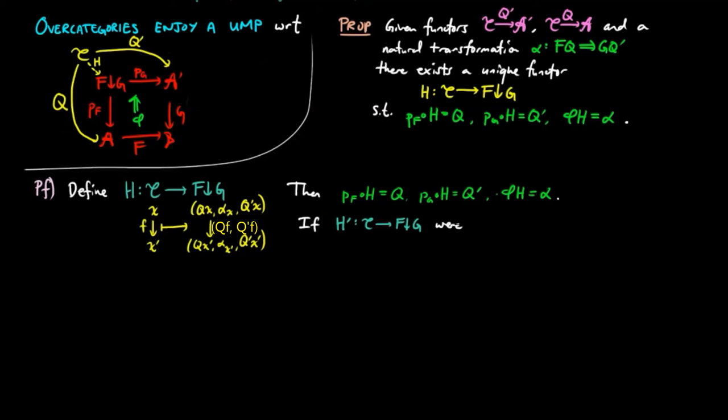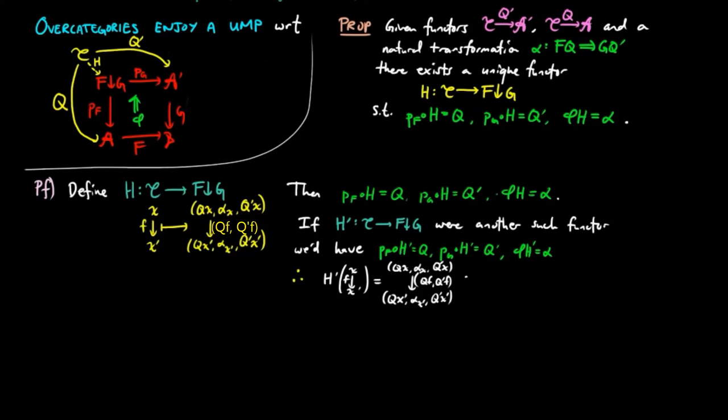Then if h prime is another such functor, then we also have that pfh prime is equal to q, pgh prime is equal to q prime, and phi h prime is equal to alpha. And so we are forced to describe h prime to take the morphism f to qf q prime f, which is how we define the functor h on f. Therefore, h is uniquely determined, and this completes the proof.